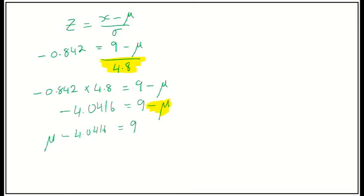And now, what I need to do is I want to move this negative 4 and I want to move that to the other side of the equation. So, I'm going to get mean equals 9 plus 4.0416. And that will give me a mean of 13.0416.